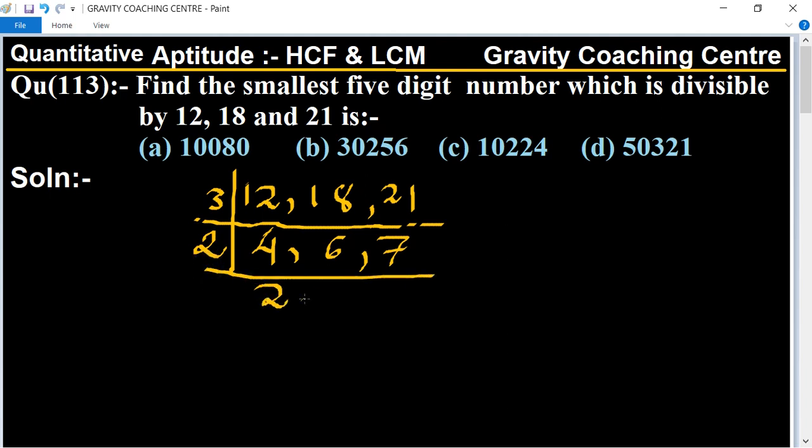Now the table of 2: 2 times 2 is 4, 2 times 3 is 6. Therefore, LCM equals 3 × 2 × 3 × 7, which equals 252.